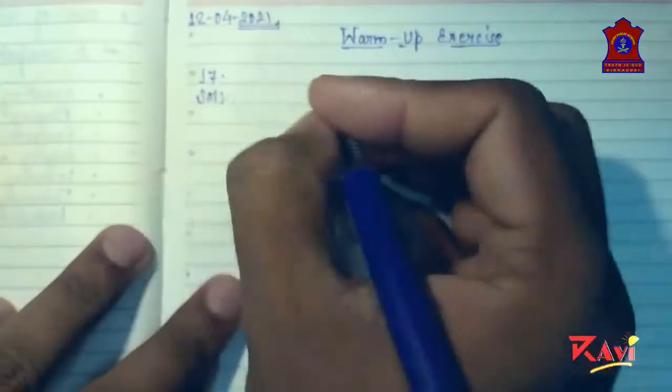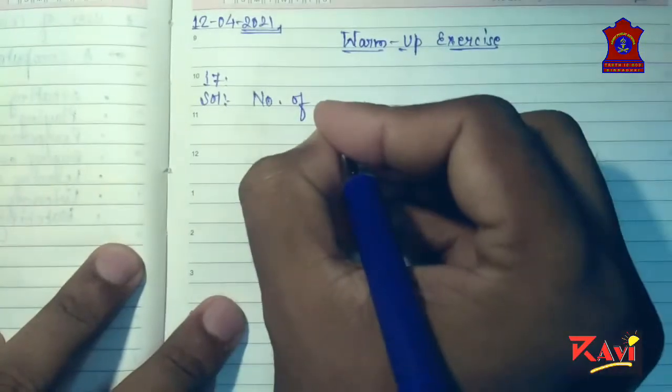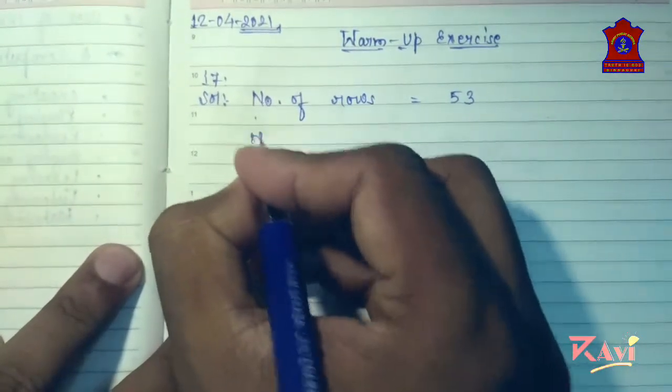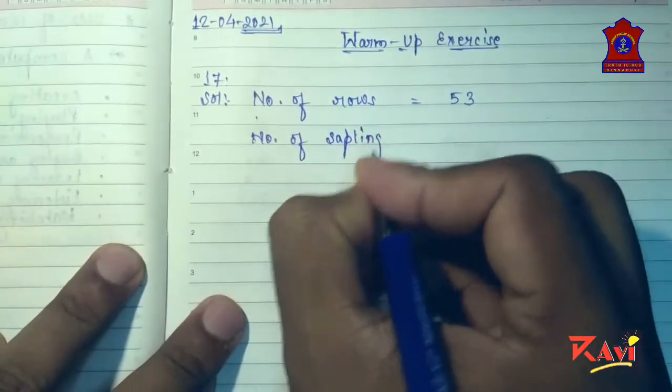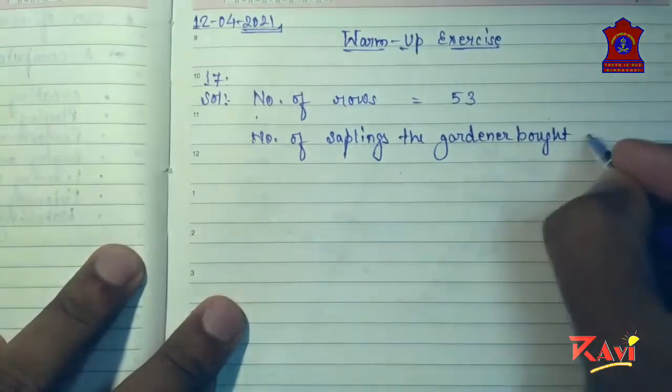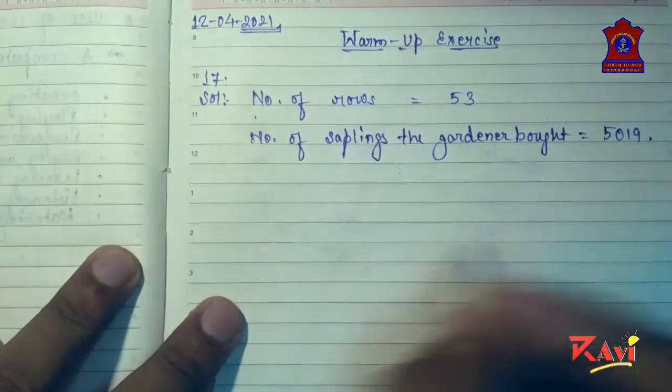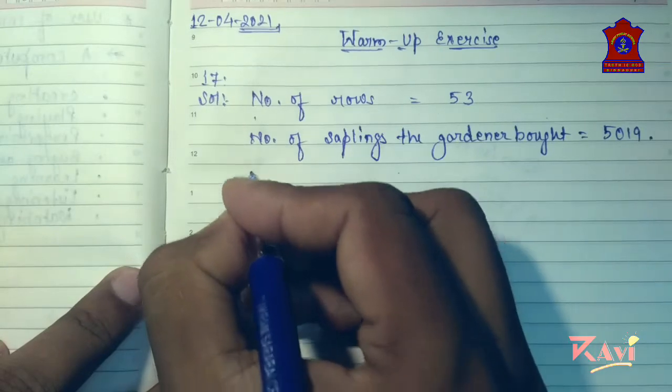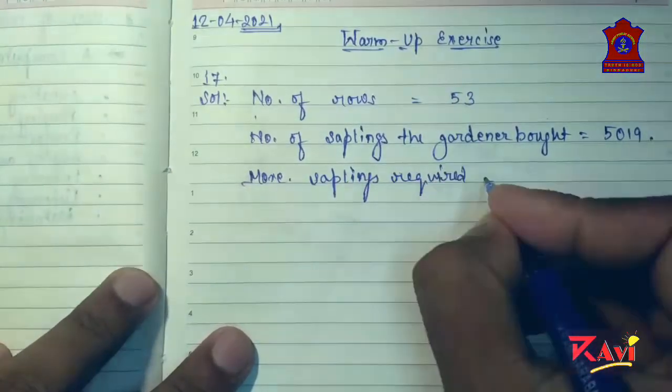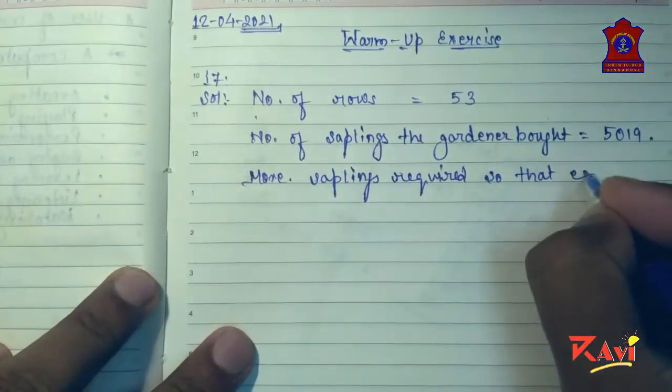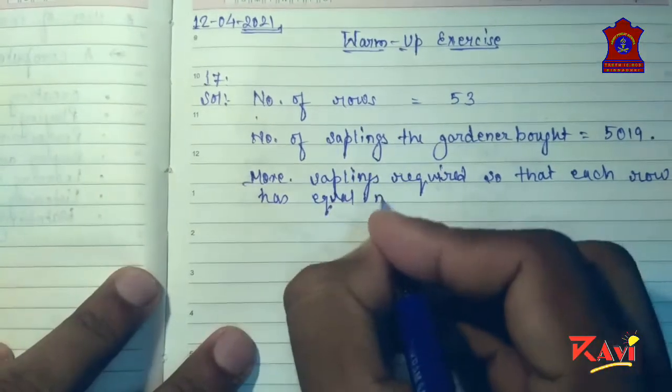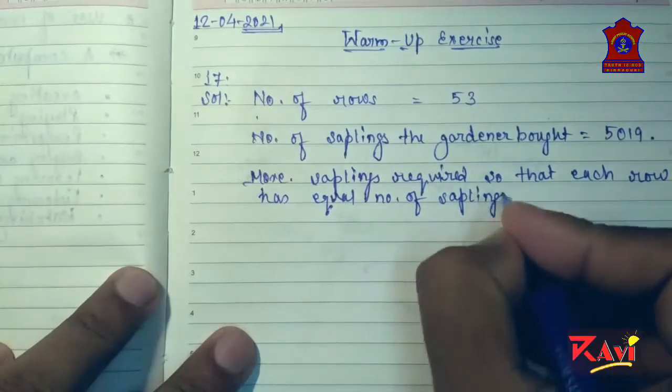So let's do this question. Number of rows equals to 53. Number of saplings the gardener bought equals to 5019. More saplings required so that each row has equal number of saplings.